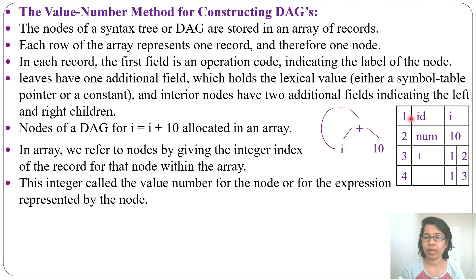And this integer is called the value number for the node or the expression represented by the node. For this i node, 1 is the value number. For this 10 node, 2 is the value number. For plus, 3 is the value number. For equal, 4 is the value number.